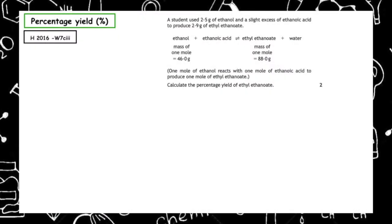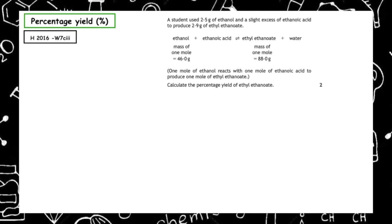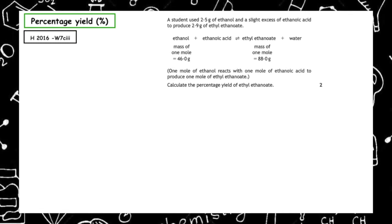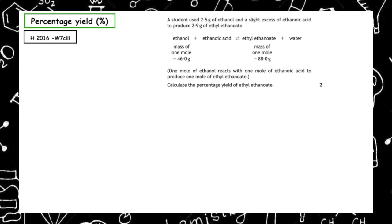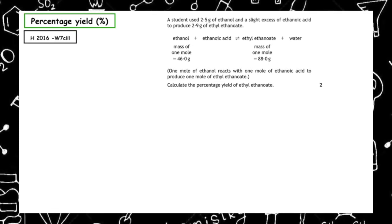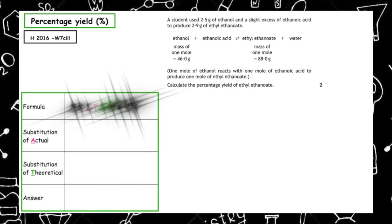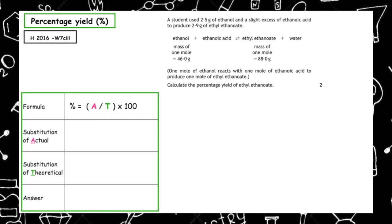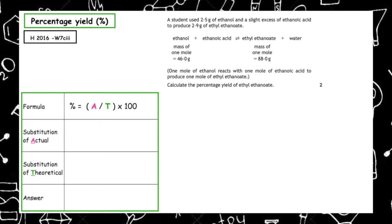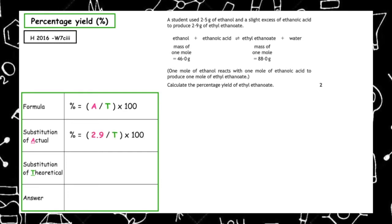This past paper question is from the Higher 2016 Written 7C Part 3. A student used 2.5 grams of ethanol and a slight excess of ethanoic acid to produce 2.9 grams of ethyl ethanoate. One mole of ethanol reacts with one mole of ethanoic acid to produce one mole of ethyl ethanoate. Calculate the percentage yield of ethyl ethanoate. We insert the formula: percentage is equal to actual over theoretical times 100, and substitute the actual value — 2.9 grams — giving 2.9 over theoretical times 100.